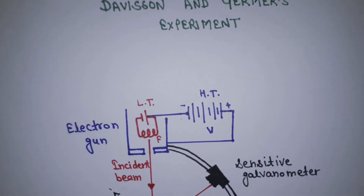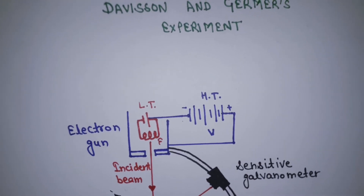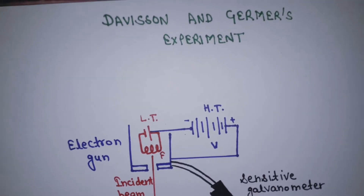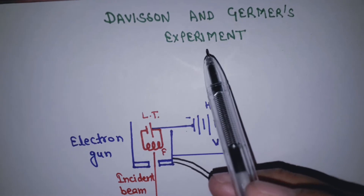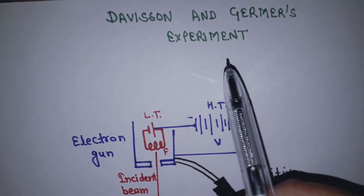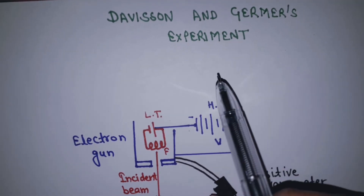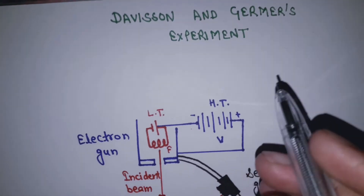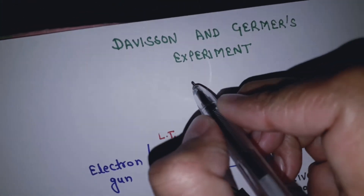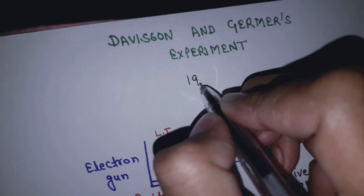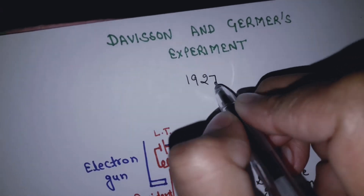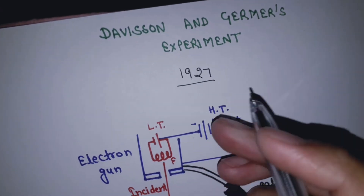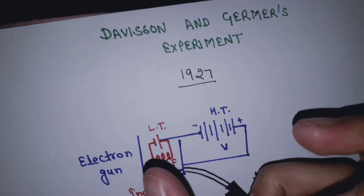Today's topic is the Davisson-Germer experiment. This is the experimental proof of the de Broglie hypothesis. Up to 1927, the de Broglie hypothesis was a speculative theory.